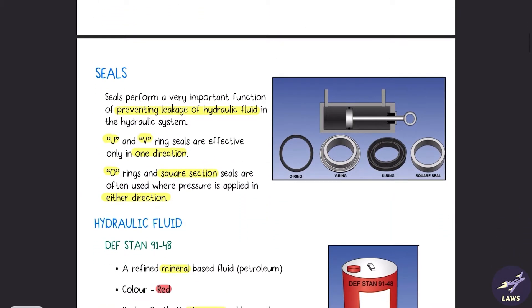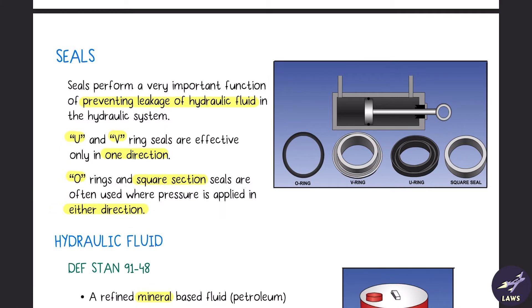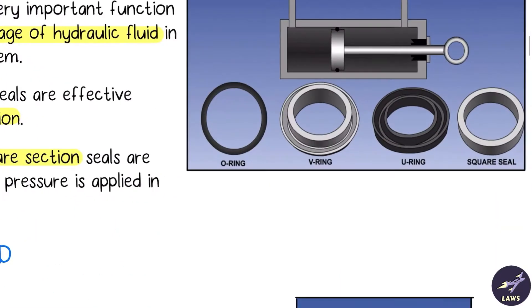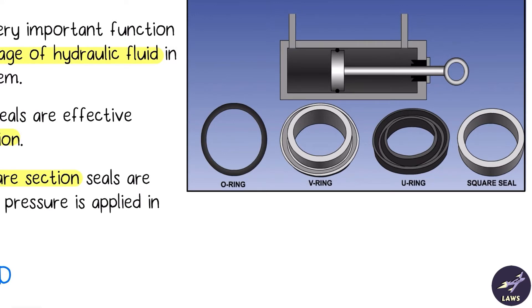We also have seals — rubber seals which prevent the leakage of hydraulic fluid. There are two types: unidirectional and bidirectional. U and V rings are unidirectional. Square and O rings are bidirectional.